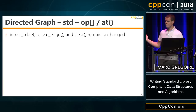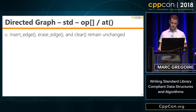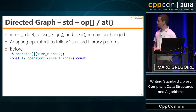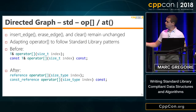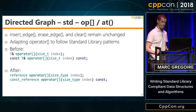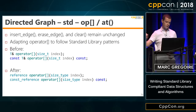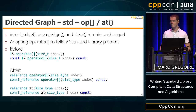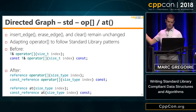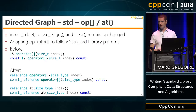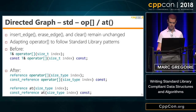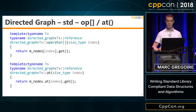Insert_edge, erase_edge, and clear remain unchanged from the basic implementation. The array index operator changes slightly to use our type aliases — instead of T& and const T&, we use our reference type alias, and the parameter changes from size_t to size_type. Similar to vector, we also add an at method: the difference is that operator[] doesn't do bounds checking while at does. Both simply forward to our vector.